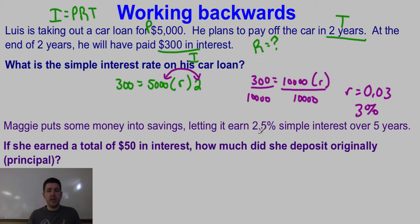It said Maggie put some money into savings, letting it earn 2.5% simple interest, that's my rate, over five years. That's my time. Let me switch up colors here. So rate and time. If she earns a total of $50 in interest, that's I, how much did she deposit originally? Meaning we don't know what the principal amount is, but start with the formula.